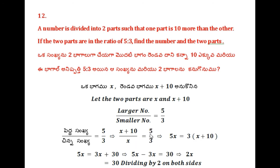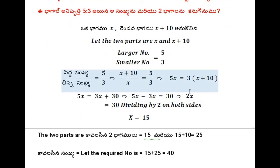So using cross multiplication — product of extremes equals product of means. 5 into x is equal to 5x. So 5x is equal to 3 into x plus 10. Here I am multiplying according to the left distributive property. 5x is equal to 3x plus 30.